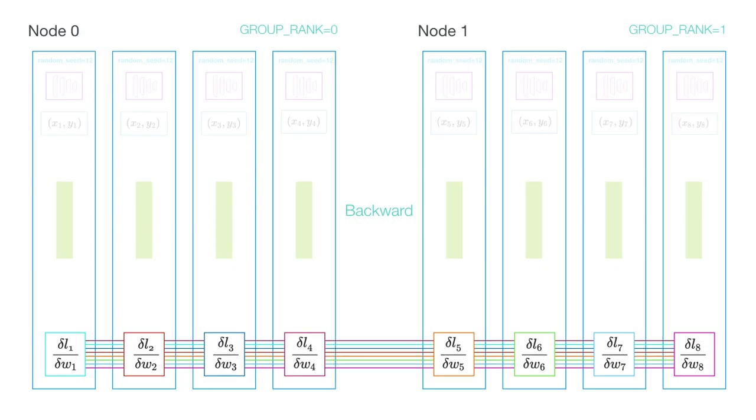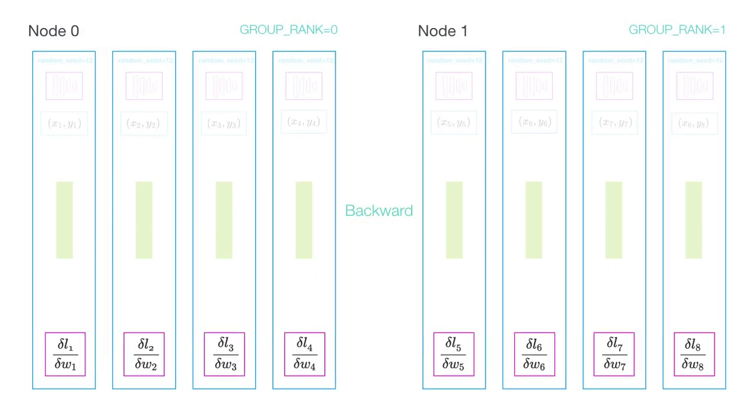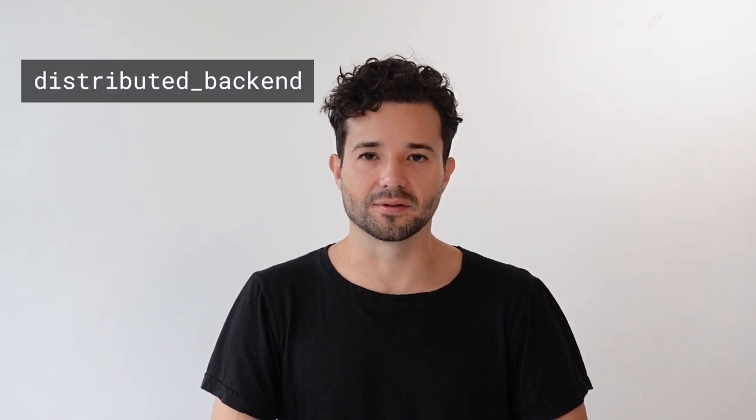Once every process has synced all the gradients on average, then all the optimizers in each individual GPU will update the weights. It is very important in DDP that you set the seed, because each process will instantiate its own individual copy of the model, and if the seed is different, the model weights will all be different. DDP is the fastest and recommended way of doing training, but you can pass in a different distributed backend flag to Lightning to use a different approach.